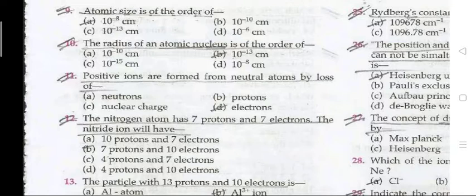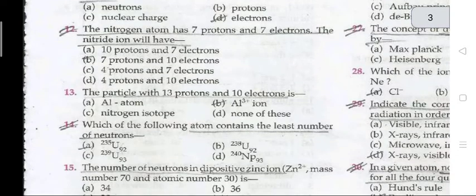Question 9: atomic size is of the order of 10^-8 centimeter. Question 10: the radius of the atomic nucleus is of the order of 10^-13 centimeter. Question 11: positive ions are formed from neutral atoms by loss of electrons. Question 12: the nitrogen atom has seven protons and seven electrons; the nitride ion will have seven protons and ten electrons.